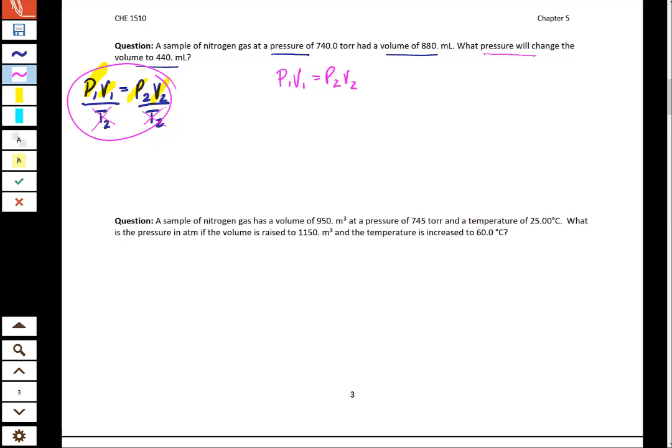It's asking you what your pressure will be at the end, so that means we're solving for P2. I'm going to rearrange this so that P2 is on its own side. Now I can start to put the different numbers in. P1 is given at 740 torr, V1 is given at 880 milliliters, and V2 is given at 440 milliliters. Our units are canceling. P2 is equal to 1480 torr. Let's make sure to watch our significant figures. We should have 3.